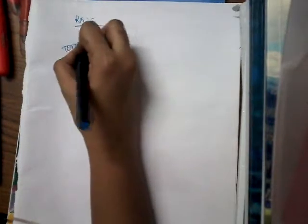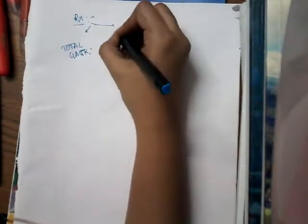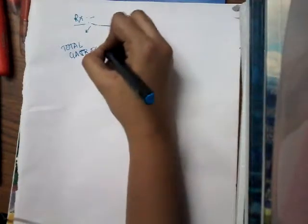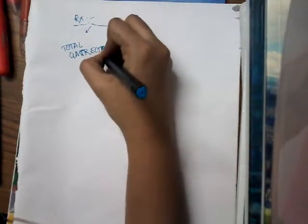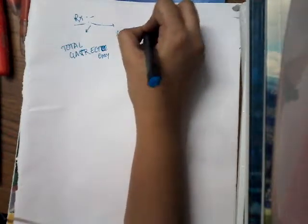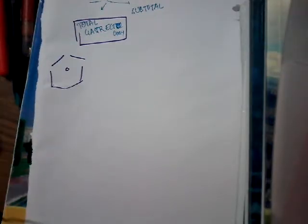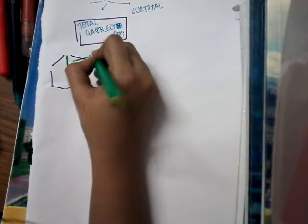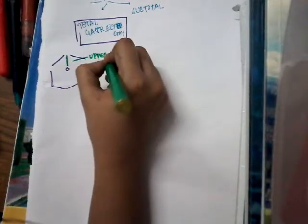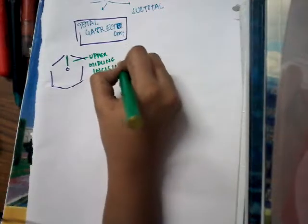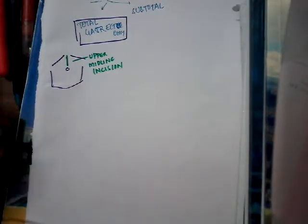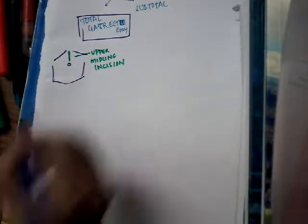In the treatment of carcinoma of stomach, there are mainly two different surgeries: total gastrectomy and subtotal gastrectomy. Let us first learn about total gastrectomy. We give an upper midline incision, then retract the abdominal walls and approach the stomach.